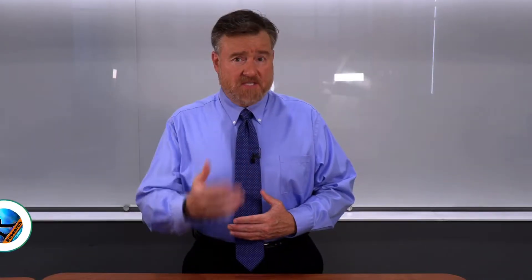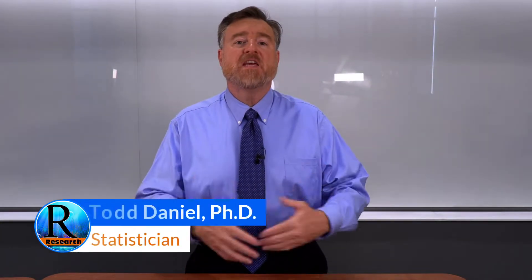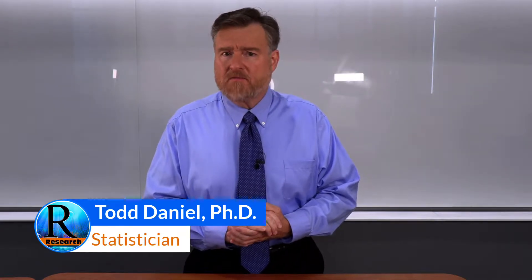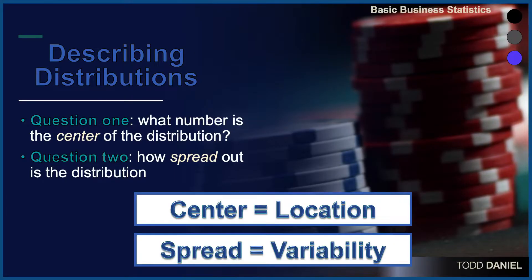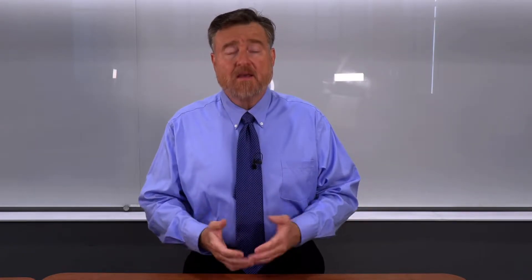When we have a distribution of scale-level scores — continuous data — there are four questions that we have about our distribution. The first two being the middle: where is the middle of the distribution, and the second being how spread out or close together are the scores in that distribution. These are measures of central tendency and variability — center and spread. To answer these two questions, I should begin by defining what I mean by central tendency and variability and explaining how these two qualities of a distribution work together.